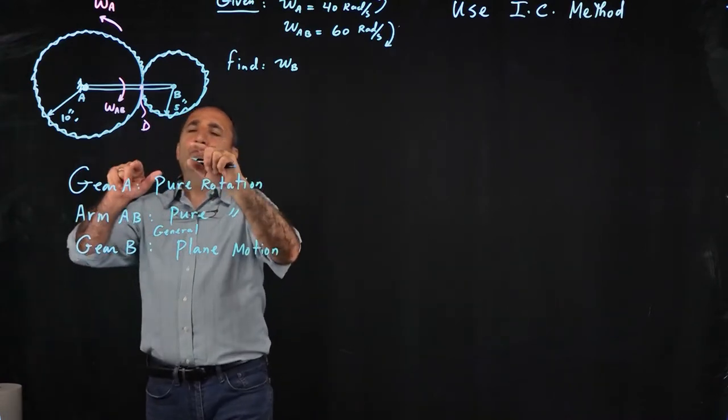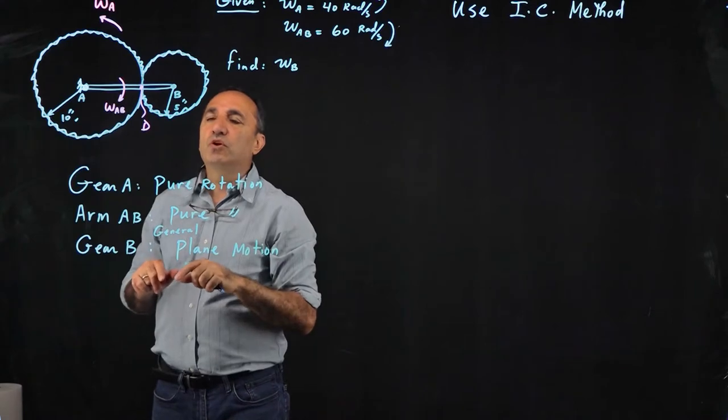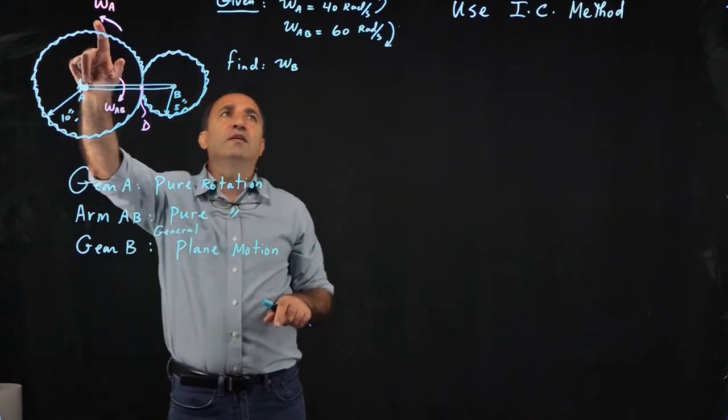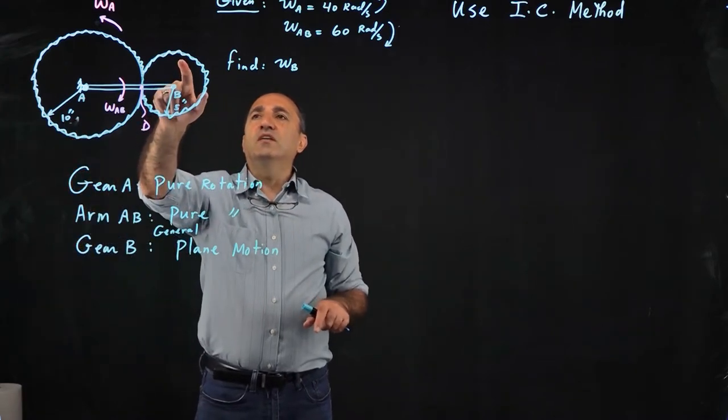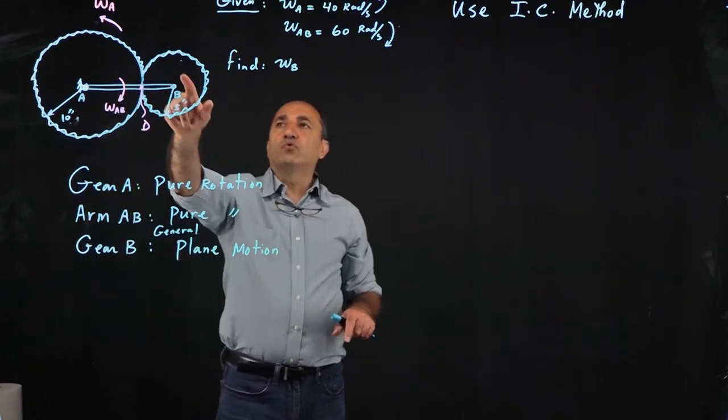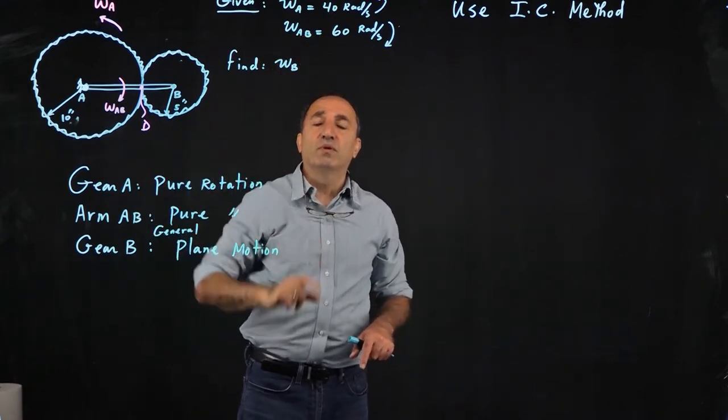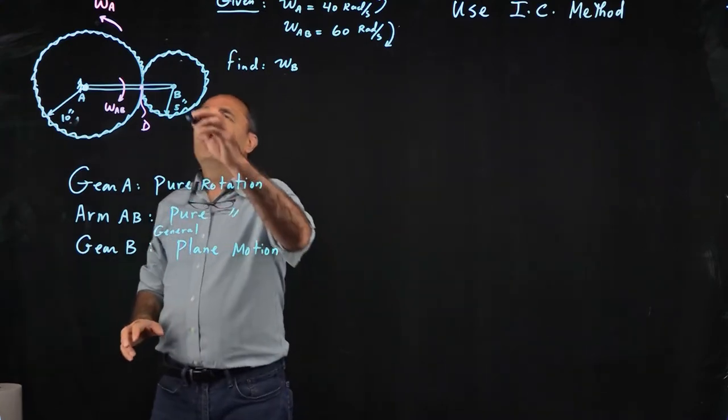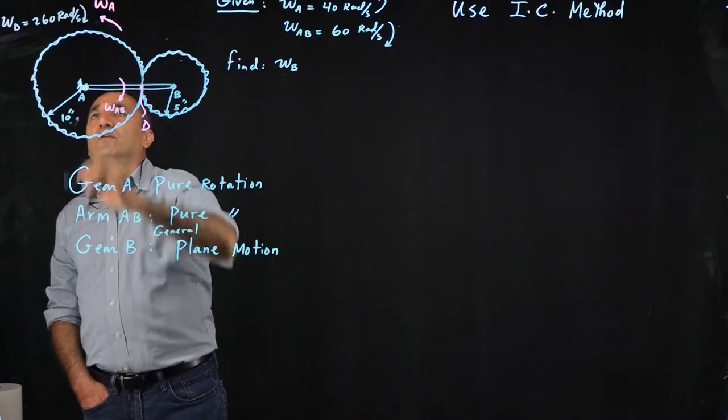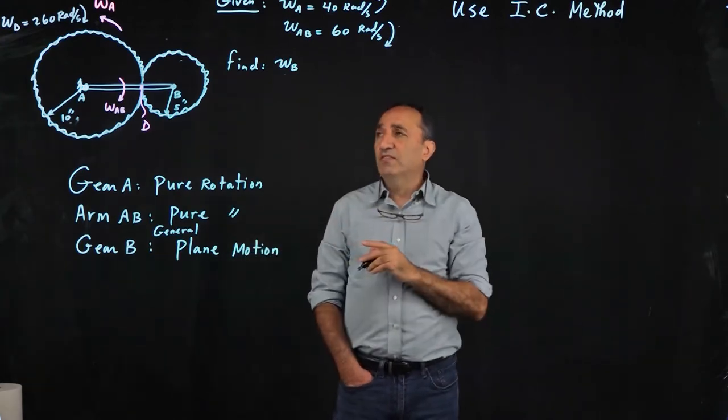So in the other video, I mentioned that if you make a mistake and think of this as two gears that are fixed at their centers in pure rotation, then finding omega B is very simple. If this is going at 40 radians per second, look at the ratio of the radii, 10 to 5. Gear B has to go twice as fast. Smaller gear rotates faster, larger gear slower. So omega B would have been 80 radians per second. That's not the case. If you have seen the other video, the correct answer for omega B happens to be 260 radians per second clockwise. Let's see if we get the same result using a different method.